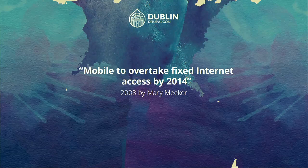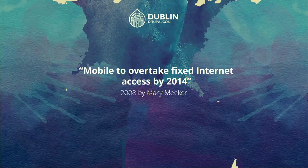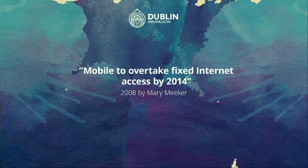What actually happened is that mobile isn't killing the desktop. What's actually happening is that users are having multi-device experiences. They start, for example, on the desktop and then follow on mobile — you search an address on the desktop, send it to your mobile, and then get directions to go to the place.